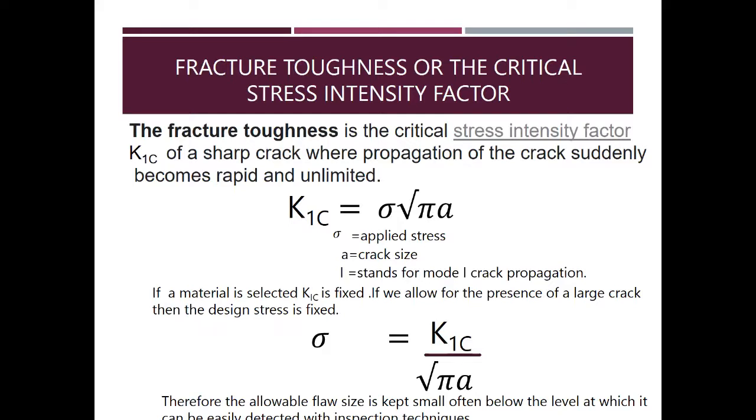If a material is selected, K1C is fixed. If we allow for the presence of a large crack, then the design stress is fixed. So σ equals K1C divided by √πa. Therefore, the allowable flaw size is kept small, often below the level at which it can be easily detected with inspection techniques.